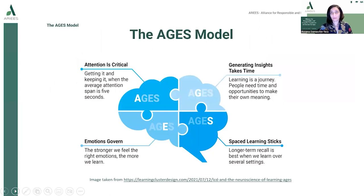One model to be used in this area is known as the AEGIS model. AEGIS is an acronym standing for attention, generation, emotions, and spacing. Attention is critical — we have to keep it once we have it, and we must be aware that the average attention span is just 5 seconds.